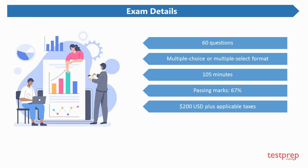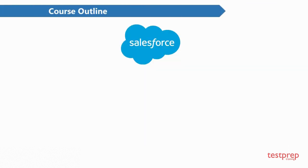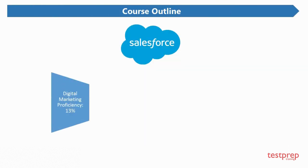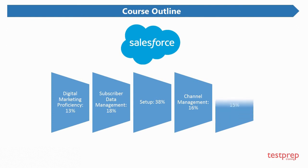The retake exam fee is 100 US dollars plus applicable taxes as required per local law. The course outline covers five areas: 1. Digital Marketing Proficiency, which comprises 13 percent weightage in the exam. 2. Subscriber Data Management, which comprises 18 percent. 3. Setup, which comprises 38 percent. 4. Channel Management, which comprises 16 percent. 5. Maintenance, which comprises 15 percent.